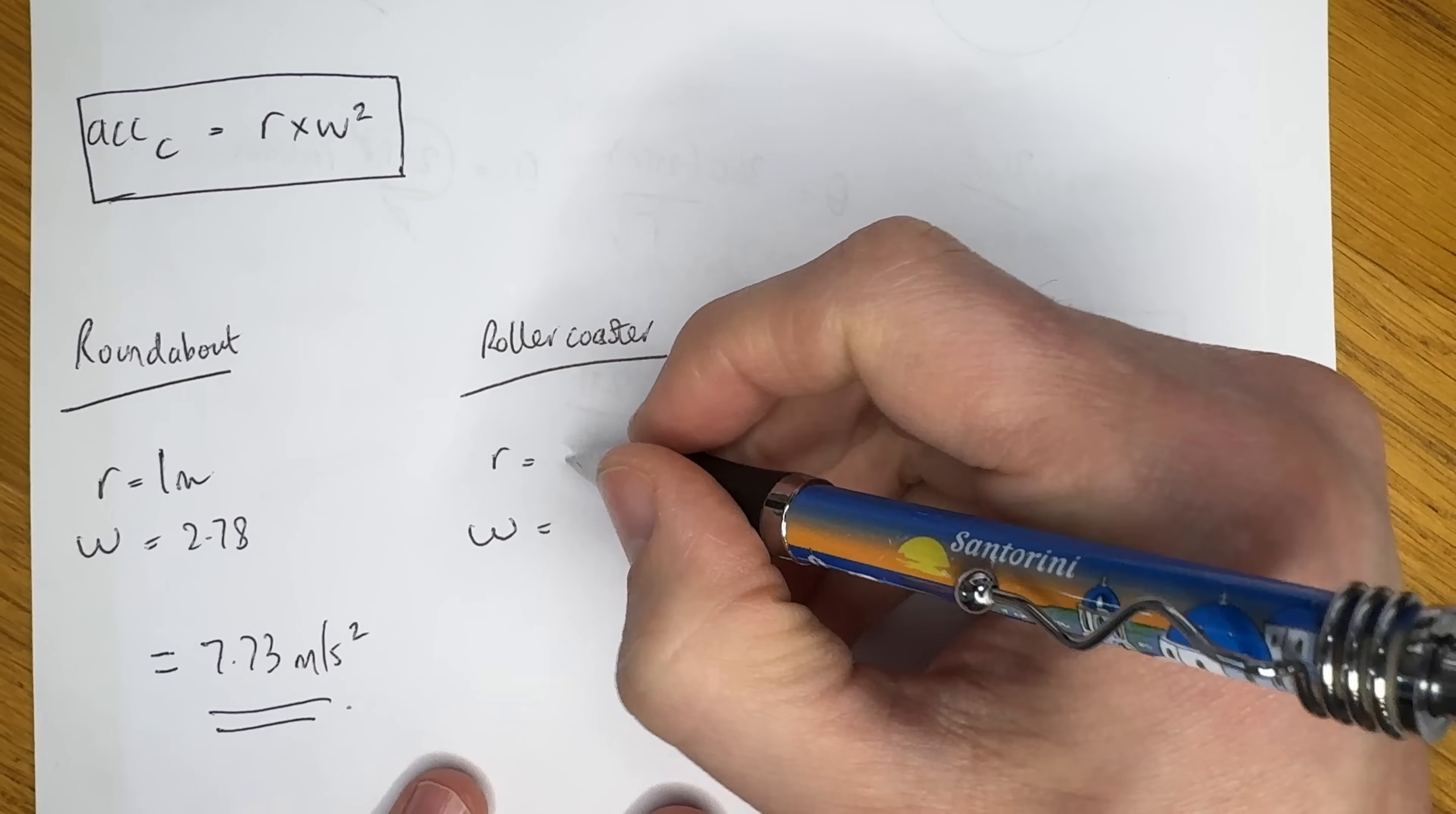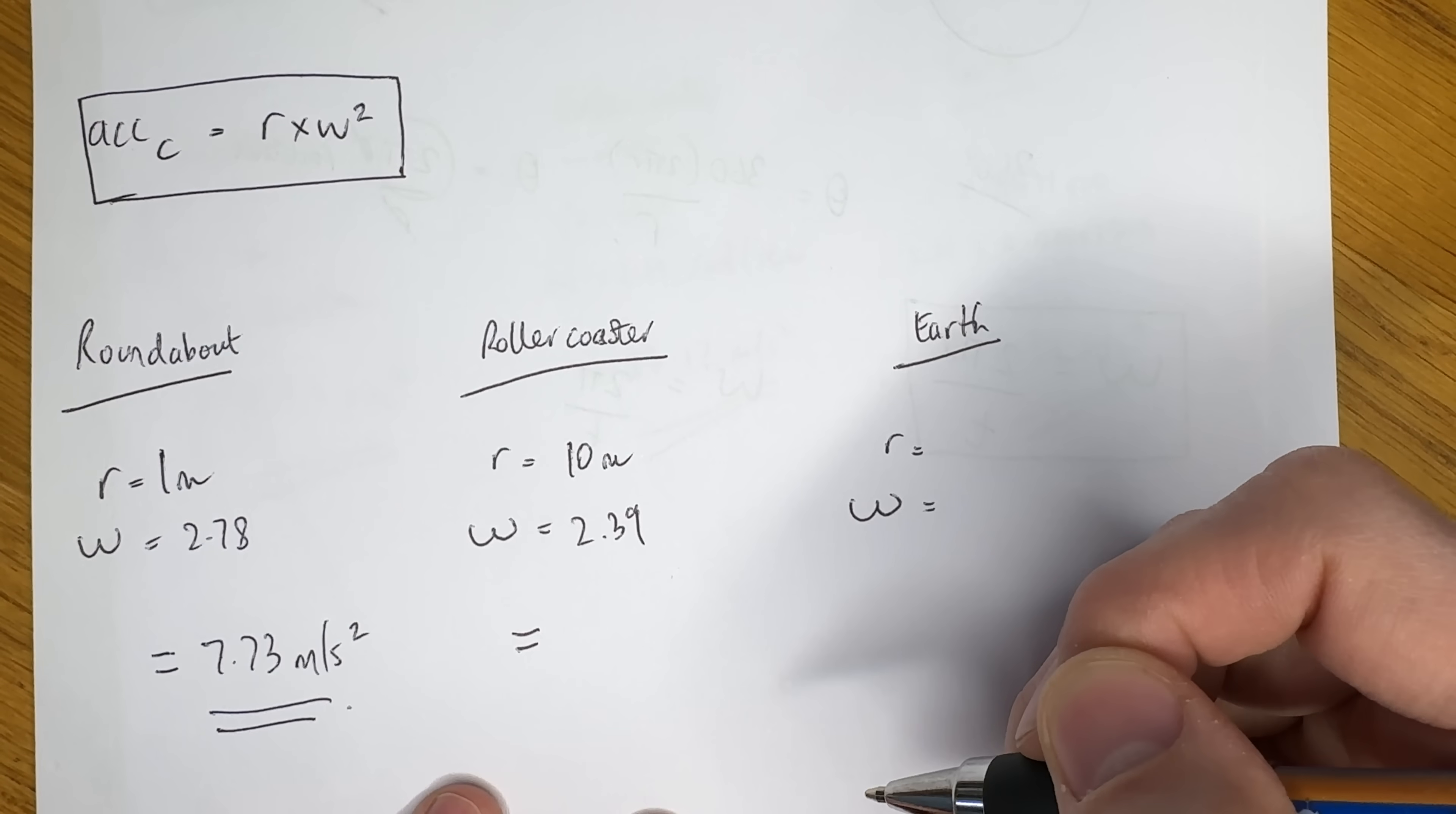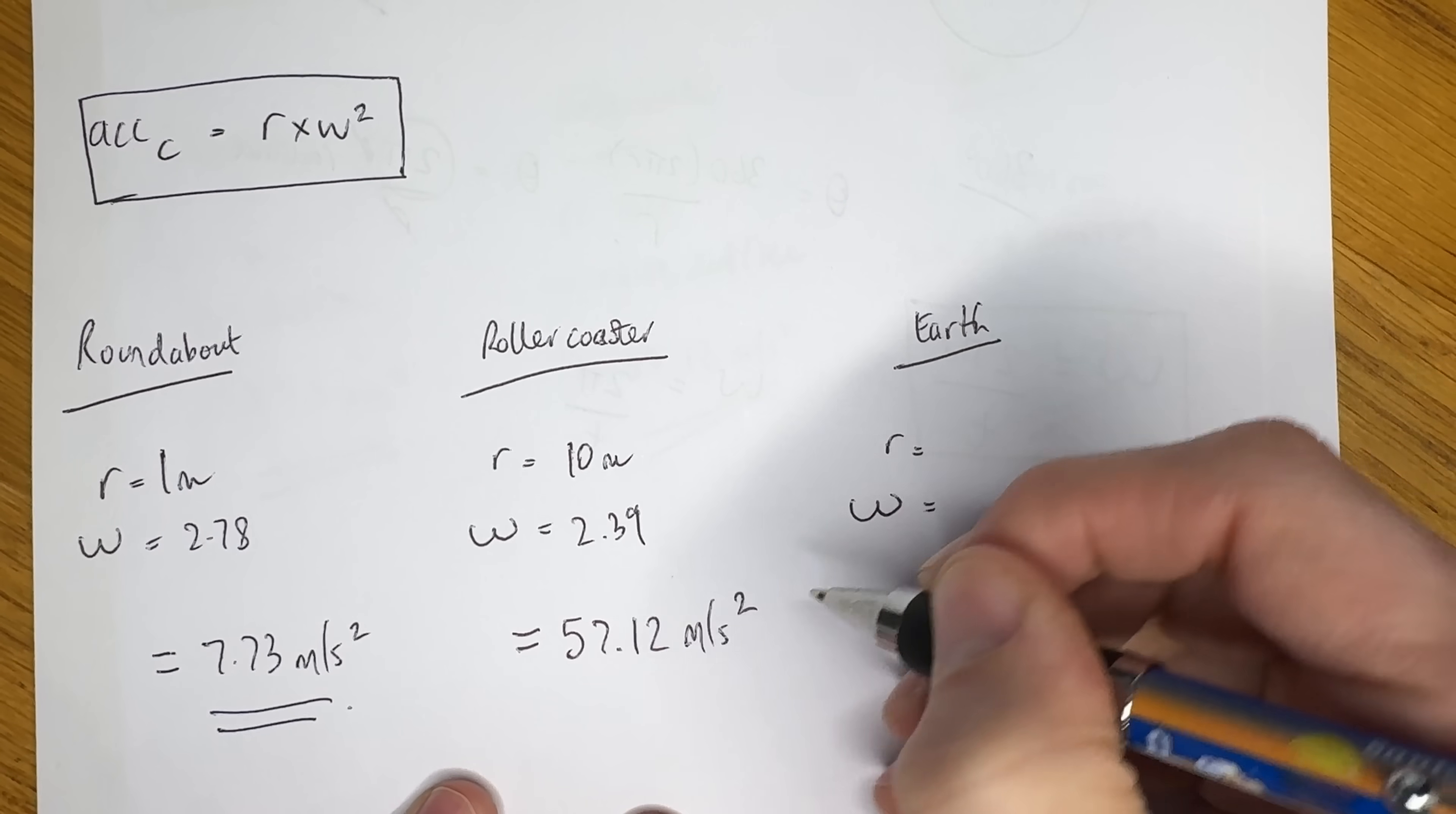Let's move on to the roller coaster. Now for that, we've got a radius of 10 metres and an angular velocity of 2.39 radians per second. So by squaring that and multiplying it by 10, we get 57.12 metres per second squared.